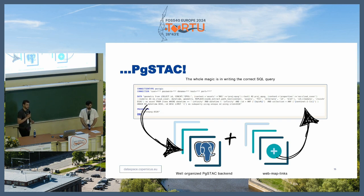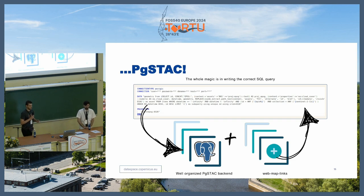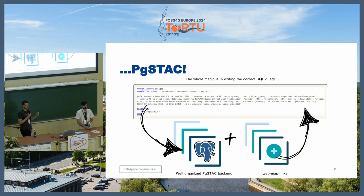We use pg-stac as the backend of the tile index. It's a Postgres table, and thanks to the MapServer SQL query, we can transform the pg-stac table into a table recognizable by MapServer. So we're loading STAC with Sentinel-2 items, and at the same time creating a WMS service out of it — the query stays the same as the table grows. STAC also has an amazing extension called WebMapLinks, which gives the possibility of adding service URLs to the STAC items, so STAC items are also associated with OGC services. The whole magic is in writing the correct SQL query.